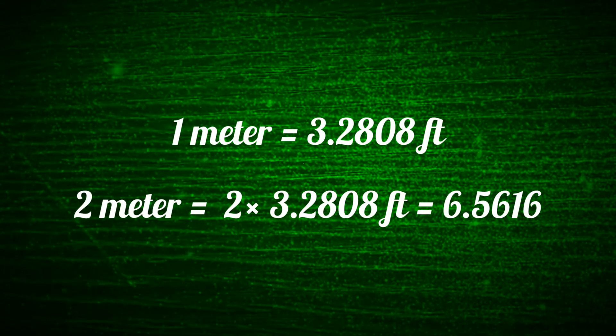One meter is equivalent to 3.2808 feet. Hence, in order to convert 2 meters into feet, we will be multiplying 2 with 3.2808, which is equivalent to 6.5616 feet.